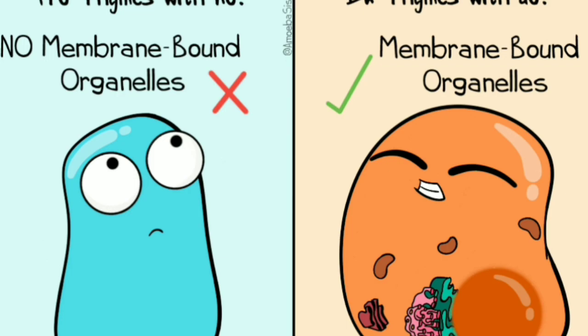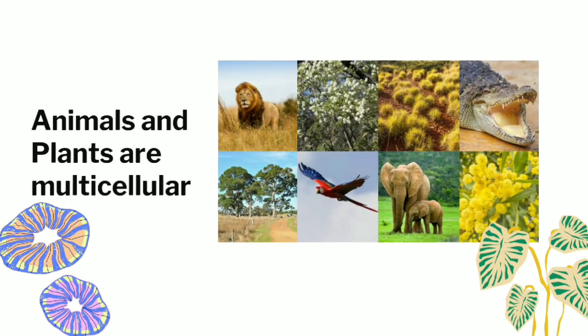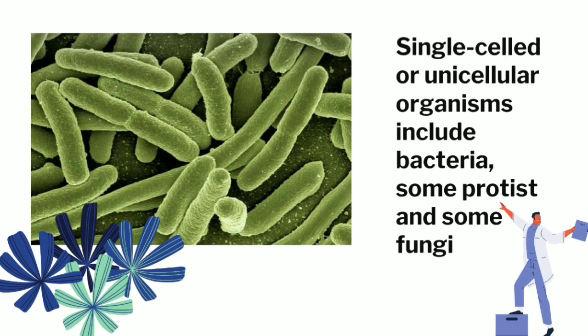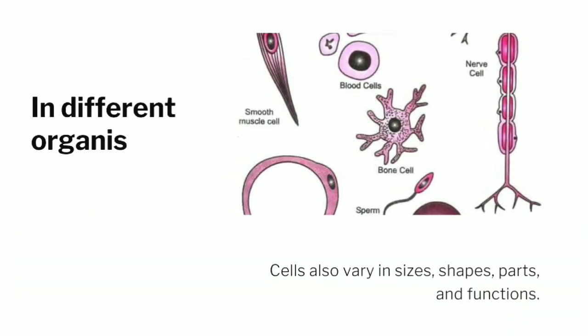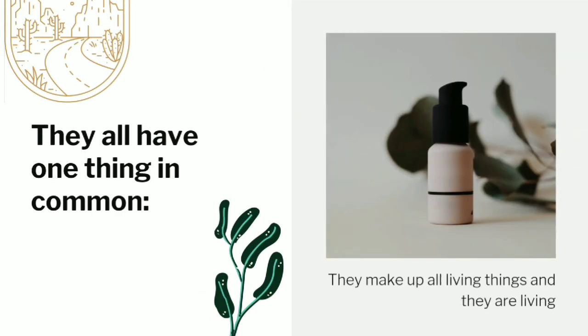Most living things you know, such as animals and plants, are multicellular organisms. Some living things are made up of a single cell. Single-celled or unicellular organisms include bacteria, some protists, and some fungi. Even though composed of a single cell, these organisms carry out all the functions necessary for life. In different organisms, cells also vary in sizes, shapes, parts, and functions. But they all have one thing in common — they make up all living things, and they are living.